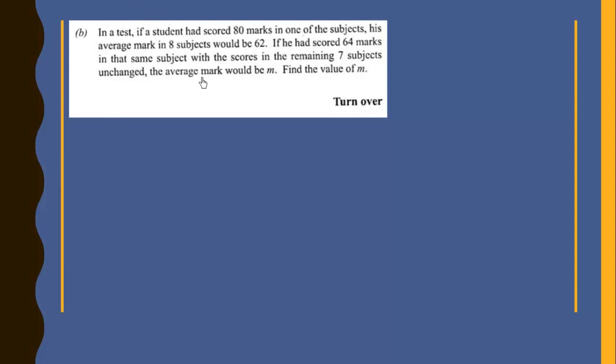In a test, if a student has scored 80 marks in one of the subjects, his average mark in 8 subjects would be 62. If he had scored 64 marks in that same subject with the same scores in the remaining 7 subjects unchanged, the average mark would be M. Find the value of M.